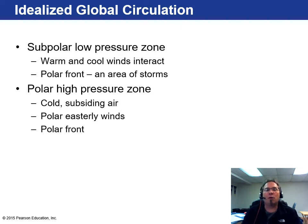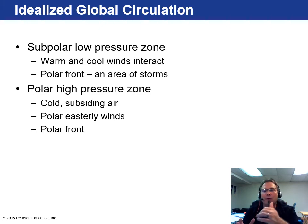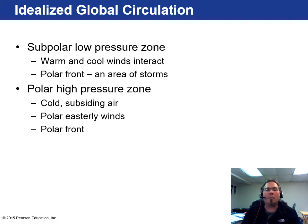You also have subpolar low pressure areas where warm and cold winds interact, producing lots of storms. This is frequent around the outer rim of the polar regions — in Alaska, Russia, Siberia, and around the rim of Antarctica. Then there are polar high pressure zones with subsiding air and polar fronts, which tend to have higher pressure because of the way wind patterns work at the poles.